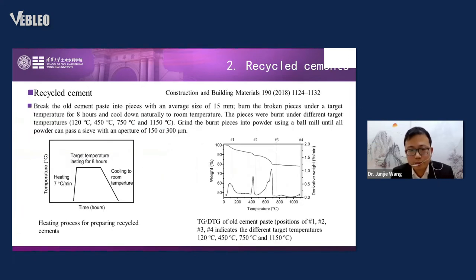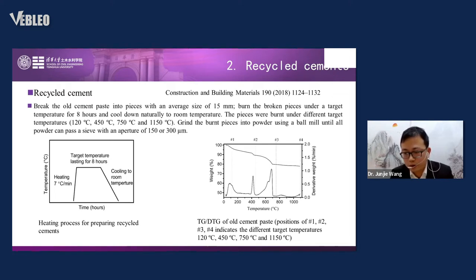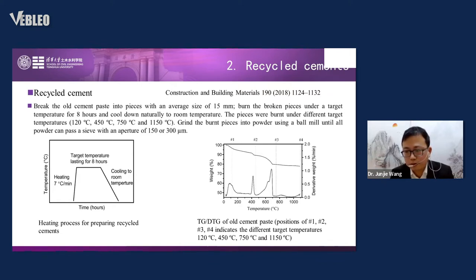For recycled cement, we break old cement paste into pieces and burn them for eight hours, then cool down. The target temperatures in the furnace are selected based on TGA of the cement: around 120°C, 450°C, 750°C, and over 1050°C. After burning and cooling, we use a ball mill to mill it into powder, then sieve with an aperture of 150 or 300 micrometers to achieve a similar particle size as ordinary cement.